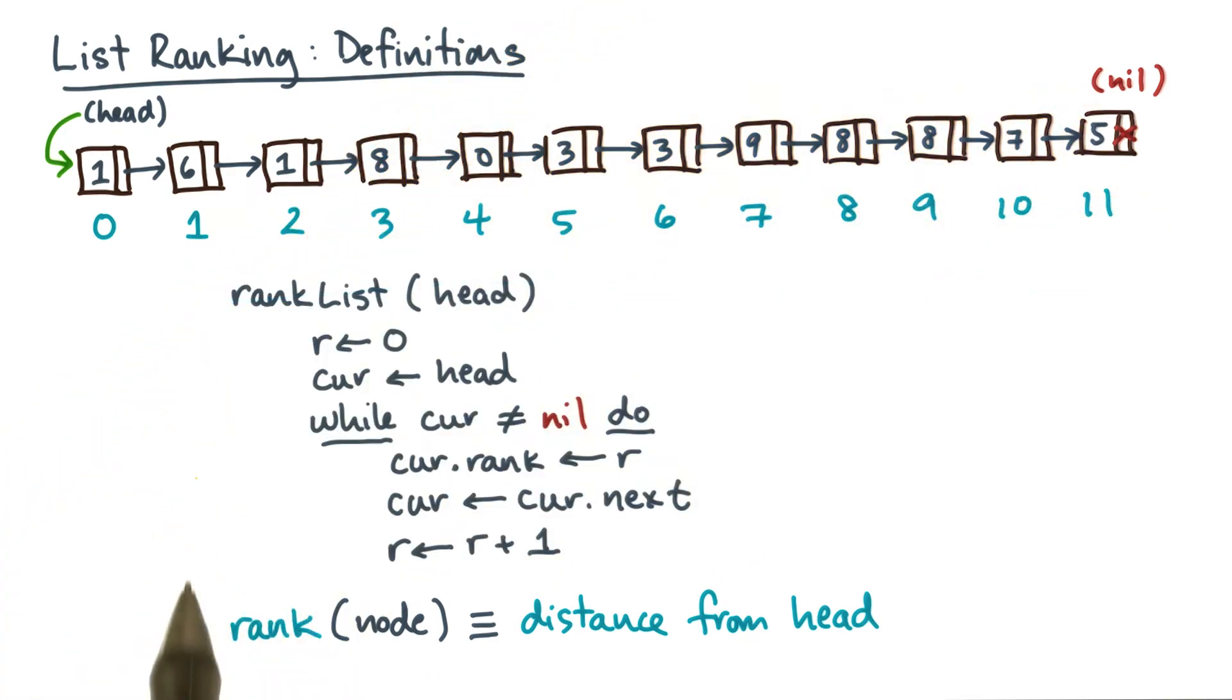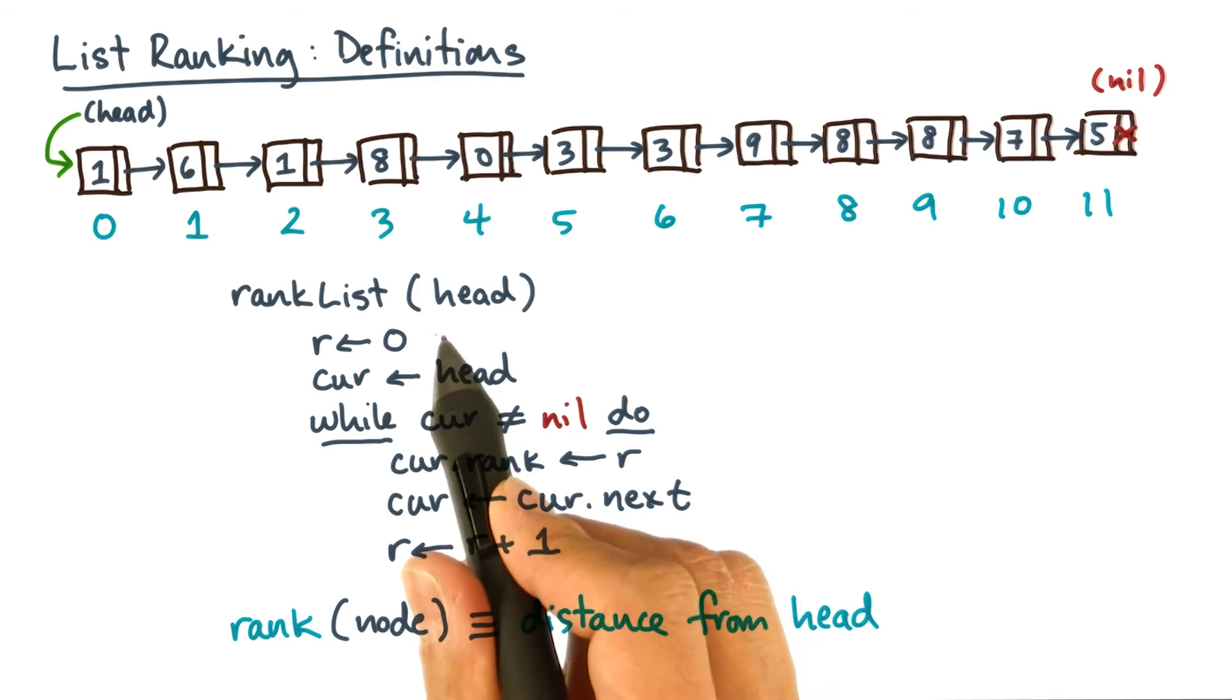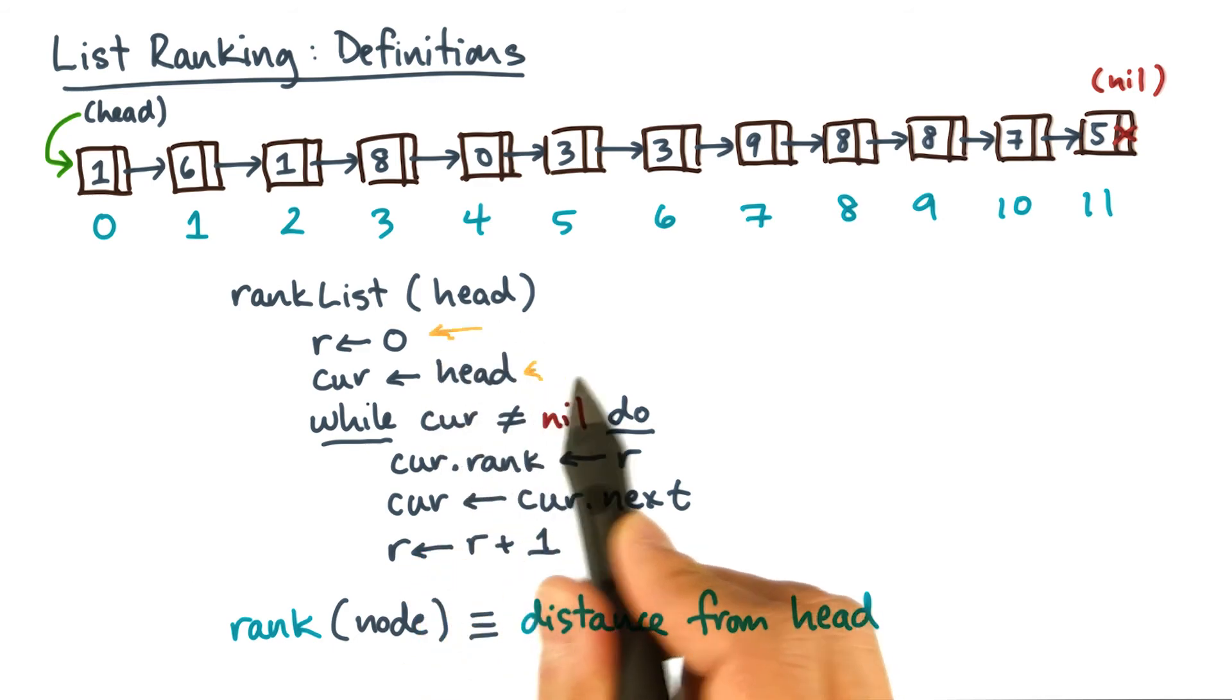To be more precise, here's pseudocode for an algorithm. Notice what it does. Maintains a counter, it starts at the head, and it iterates over the rest of the nodes, storing the rank and updating the rank as it goes.